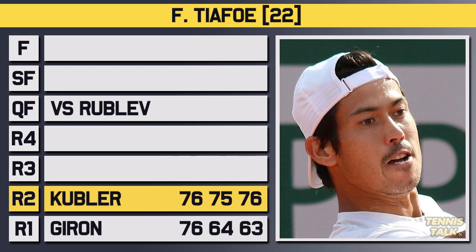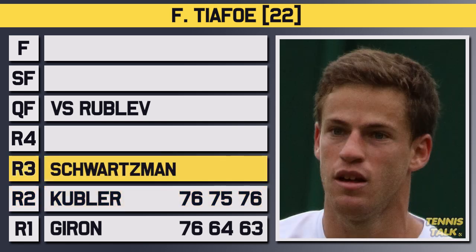In the third round, he'd take on the 14th seed Diego Schwarzman, who had played well at the US Open prior, and after a very close first set, Tiafoe got through in straights, 7-6, 6-4, 6-4.